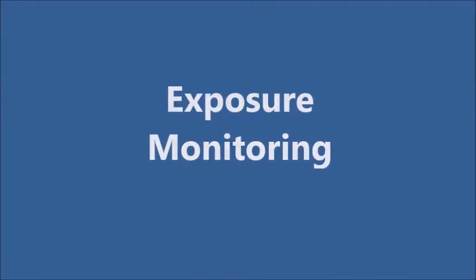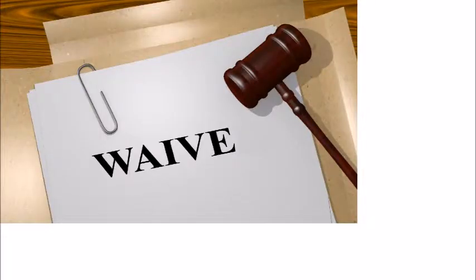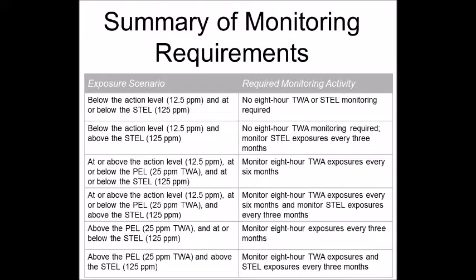Exposure monitoring: two ways to measure employee exposure are air sampling of breathing zones and medical surveillance of employees with the highest expected exposure. Monitoring can be waived if the data proves that MC levels aren't released above the PEL or STEL, or employees are exposed for fewer than 30 days per year.